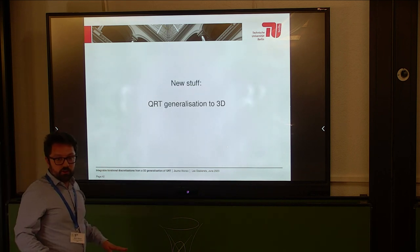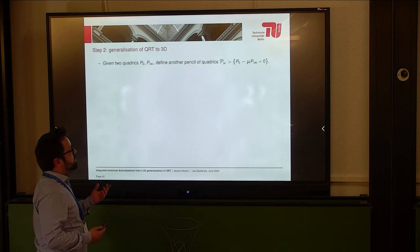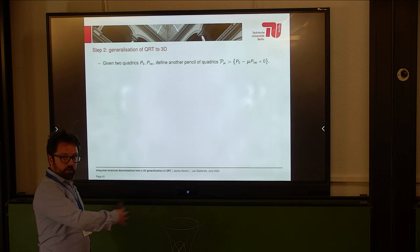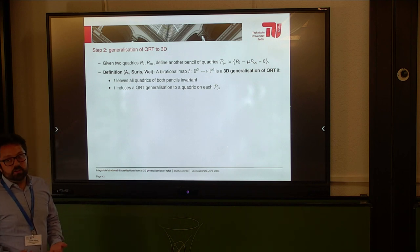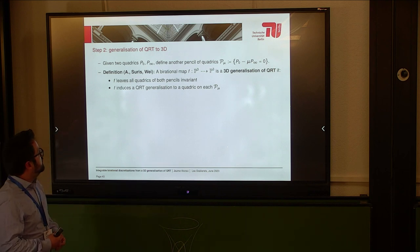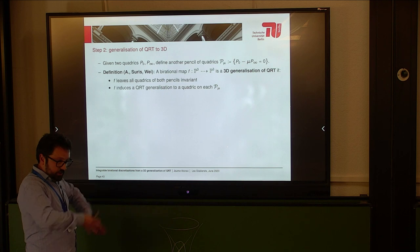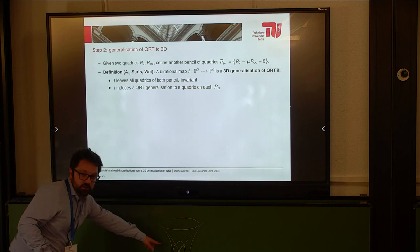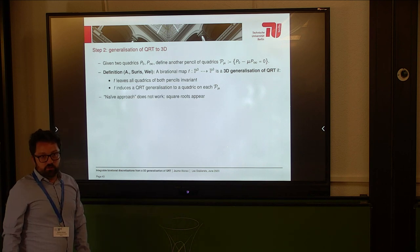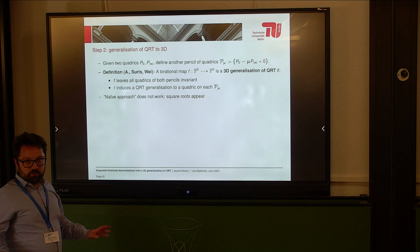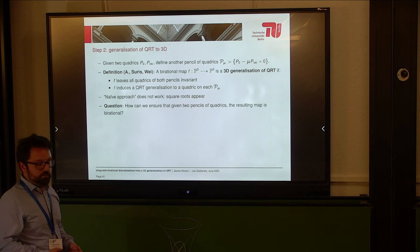It looks good. We have the map on one quadric; I take a pencil, cover all the space, and I'm done. I take a pencil instead of a single quadric P. What I would call a 3D generalization of QRT is that the map leaves all the quadrics of both pencils invariant, and if restricted to a quadric it looks like the 2D construction. But the naive approach doesn't work — some square roots appear, so the maps are not birational. The question is: can I put some restrictions or conditions so that this does work?